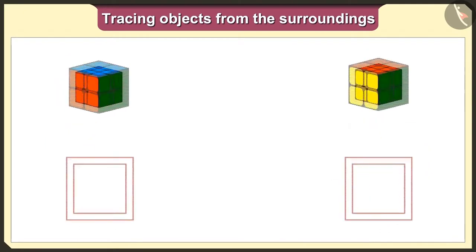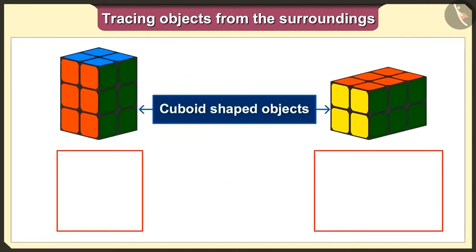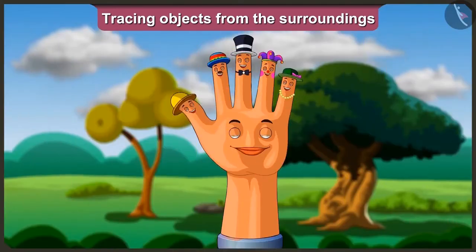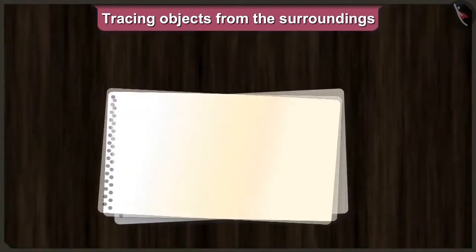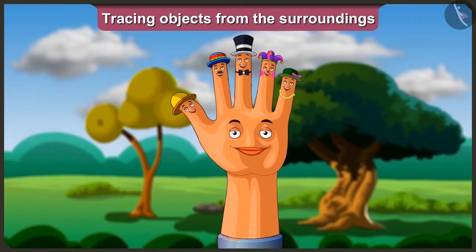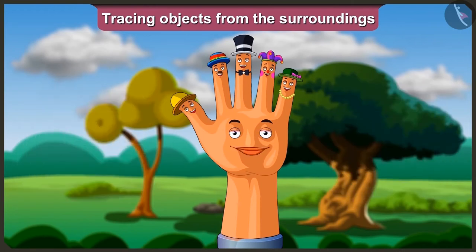So Tallman, remember that if we keep the cube-shaped toy in any way and trace it, we will always get the square shape. And if we trace the cuboid shape, we will always get either a square or a rectangle shape. So friends, today in this video we learned some interesting facts related to the cube and cuboid-shaped objects from our surroundings. Now you will be able to identify the square and rectangle very well. In the next video, we will learn to identify different shapes we will get when we trace the objects from our surroundings.